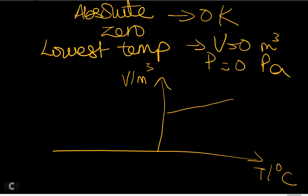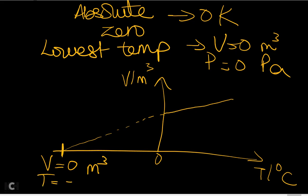If you conduct an experiment monitoring the volume of a gas at different Celsius temperatures and plot the results, you can extrapolate the line to where it crosses the x-axis. That intercept is where volume equals zero, and it corresponds to −273°C. This is how we deduce that 0 K equals −273°C: by definition, absolute zero is the temperature where both volume and pressure are zero.